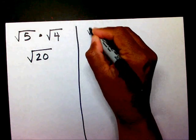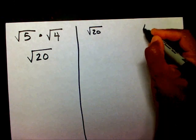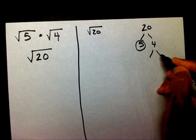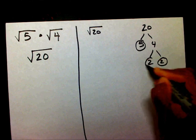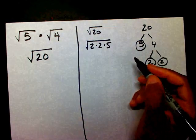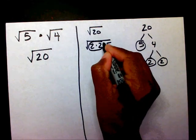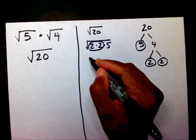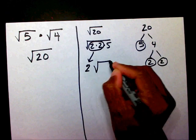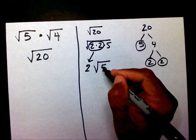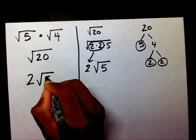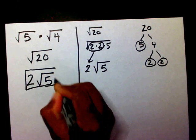We have radical 5 times radical 4. 5 times 4 will give me radical 20. I need to simplify this, so I'm going to find the prime factorization of 20. The prime factorization of 20 is 2 times 2 times 5. 2 times 2 is 4. 4 is a perfect square. Square root of 4 is 2. That's going to go on the outside, and the 5 is going to stay on the inside. Therefore, our final answer is going to be 2 radical 5.